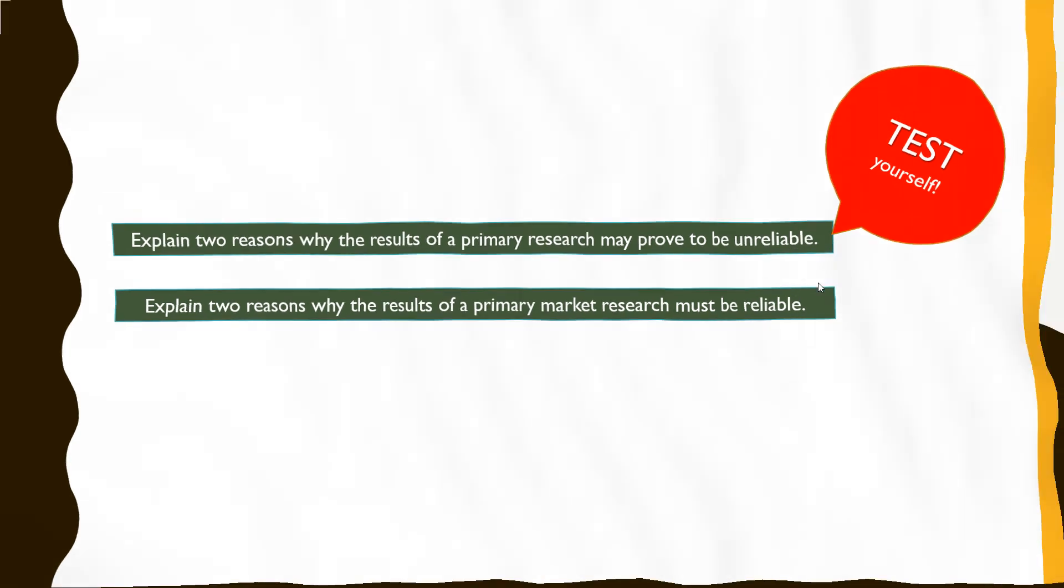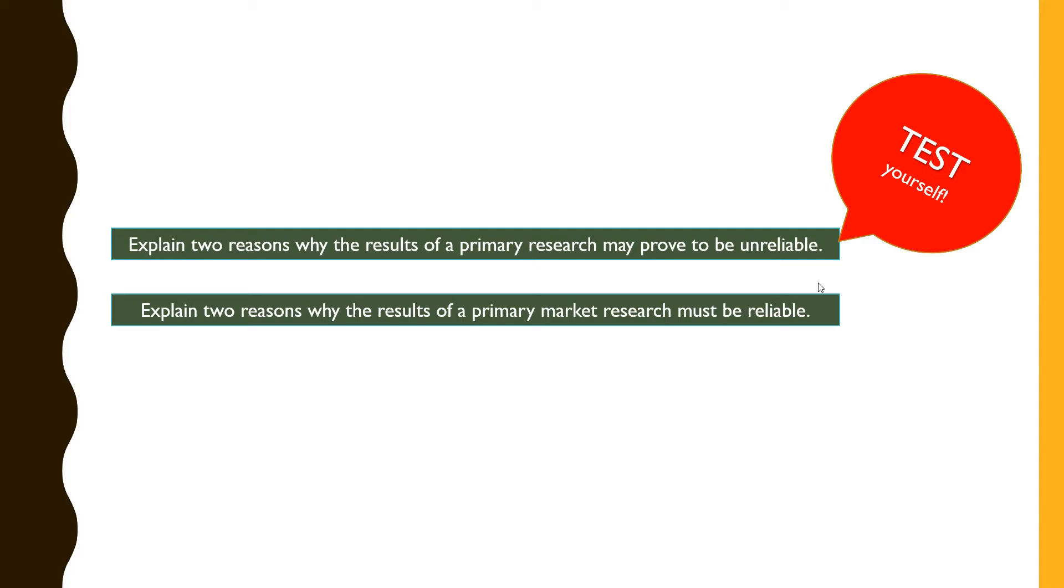Now having said that, let's look at some of the questions that you're going to do as your homework. Explain two reasons why the results of primary research may prove to be unreliable. Explain two reasons why the results of primary research must be reliable. The first question talks about why the results may become unreliable and the second what is the importance of gathering reliable information. These are the two questions that you can attempt on your own for practice.